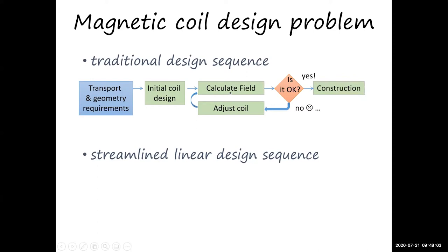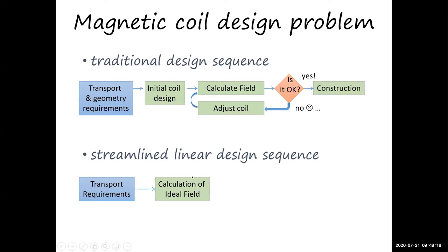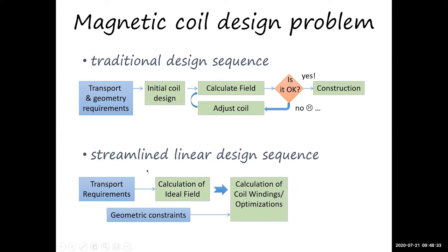I'm going to report on a streamlined design where instead you break up your requirements into two steps. One is your field requirements — you calculate the fields you could have without worrying about geometric constraints or where to put the coils. Then as a second step, you add in the geometric constraints — where do you want to put your coils — and instead of calculating the field, you actually calculate what the windings should look like. The only thing left to do is validate your choice using traditional Biot-Savart calculations.